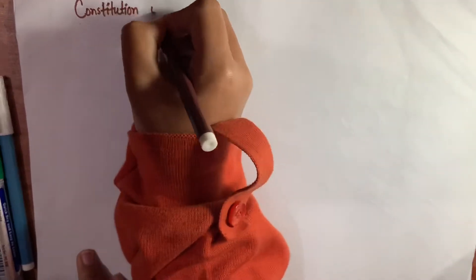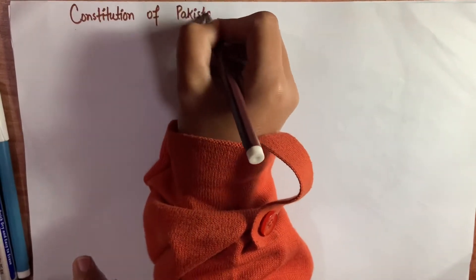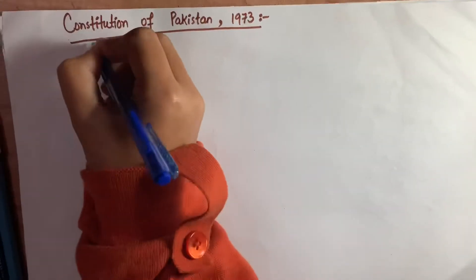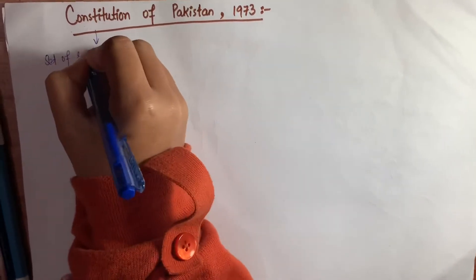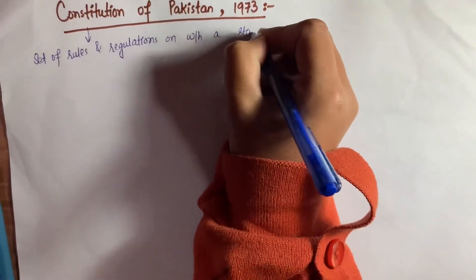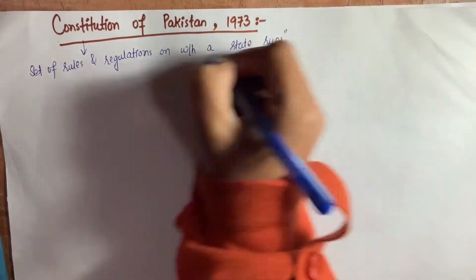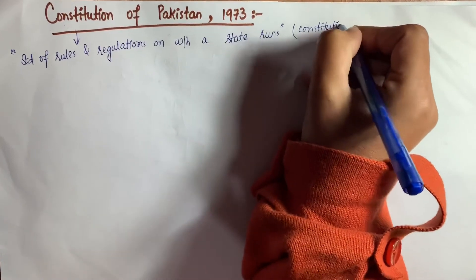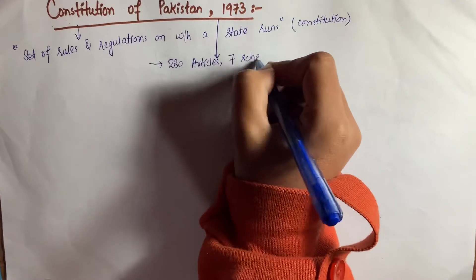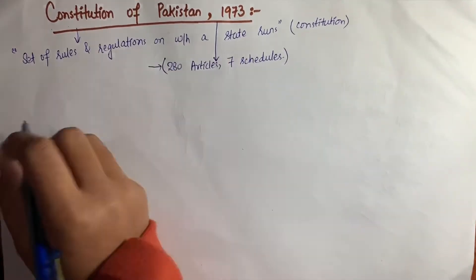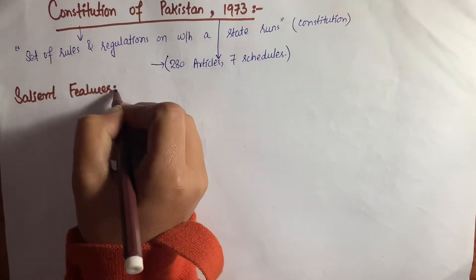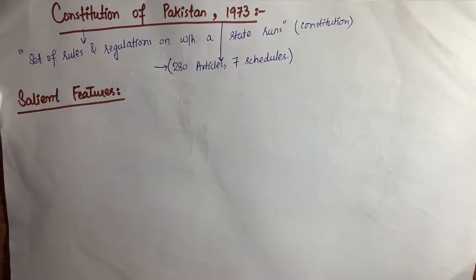Assalamu Alaikum friends and welcome to my channel, Study Law with Bushra. Today we will discuss the Constitution of Pakistan 1973 and its main features. But before starting, we need to know what the word constitution means. The constitution is the set of rules and regulations on which a state runs. The Constitution of Pakistan 1973 consists of 280 articles and seven schedules.